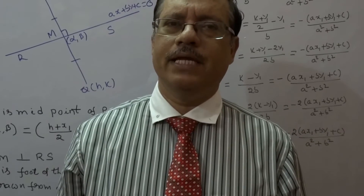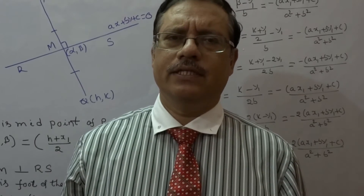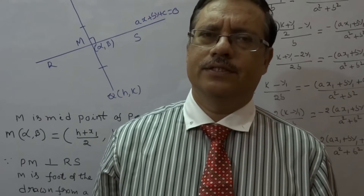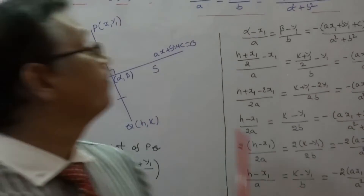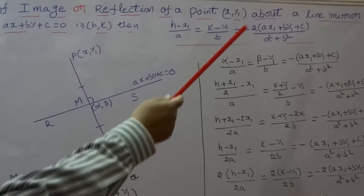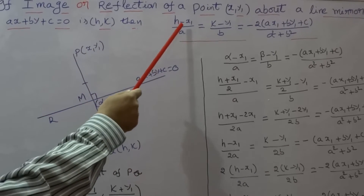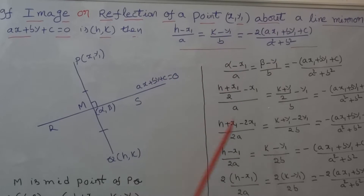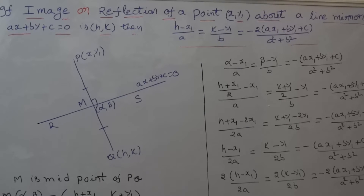Now we discuss the image or reflection of a point on a line mirror. This is a very useful concept for the JEE and also for state board exams. The statement is: if the image or reflection of a point (x1, y1) about a line mirror ax + by + c = 0 is (h, k), then (h - x1)/a = (k - y1)/b = -2(ax1 + by1 + c)/(a² + b²).